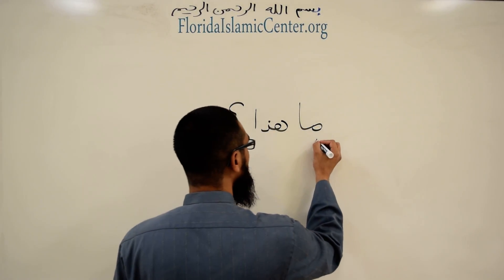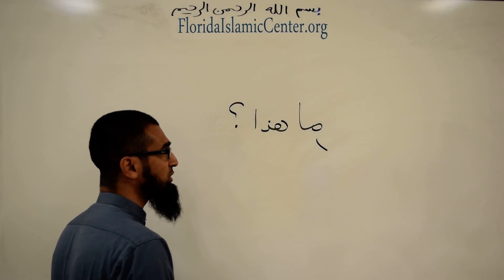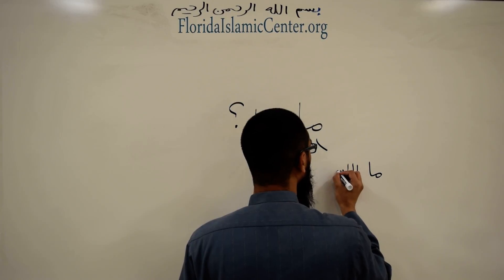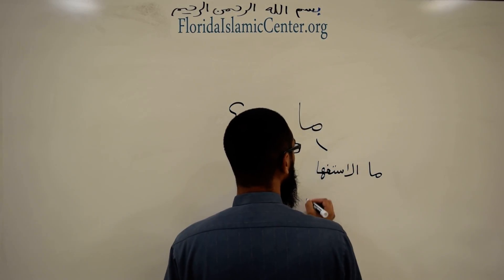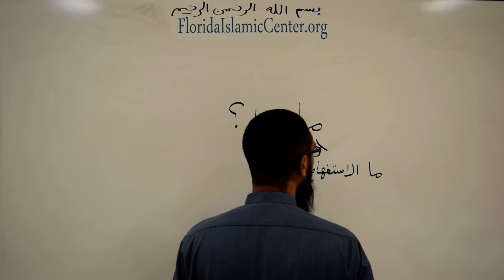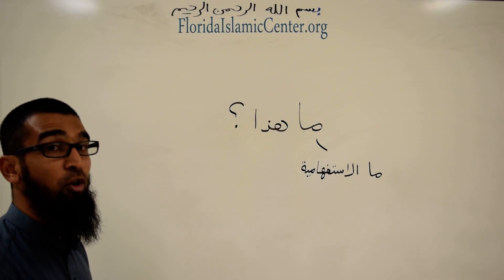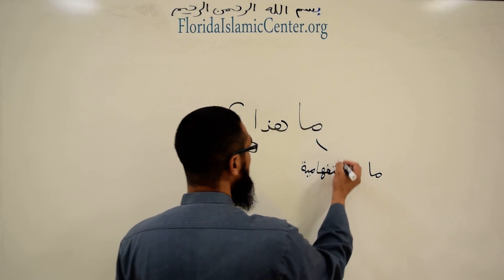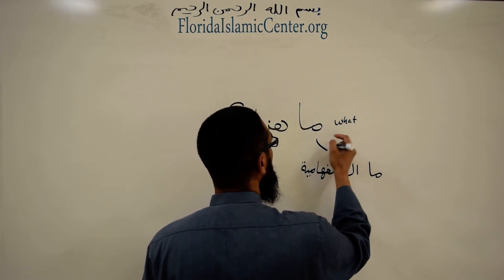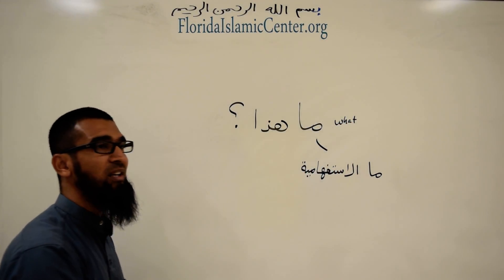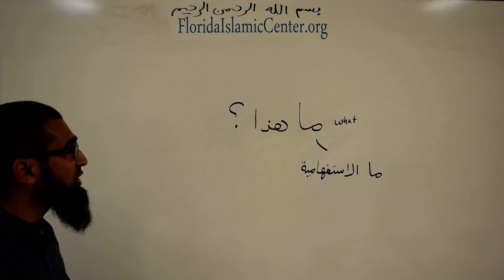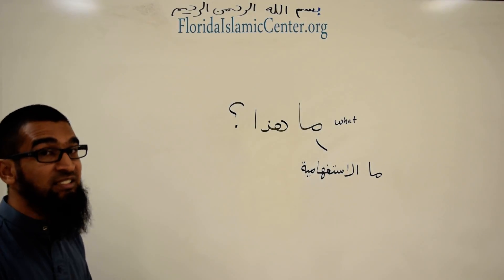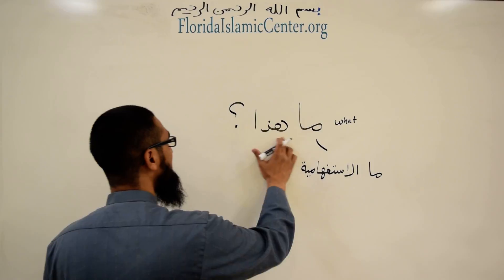So ما is used if you want to ask a question. It's called ما الاستفهامية — the ما for questioning, the ما that you use to ask a question meaning 'What?' Literally it means 'What?' ما هذا means 'What this?' — and we said already that there is no such word as 'is' in Arabic, so ما هذا means 'What is this?' And that is a complete, perfect sentence.